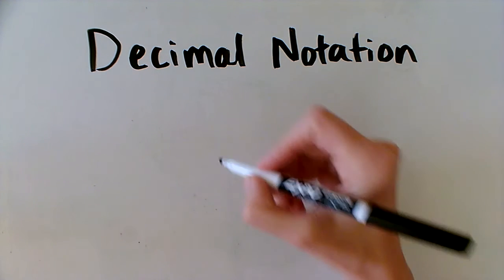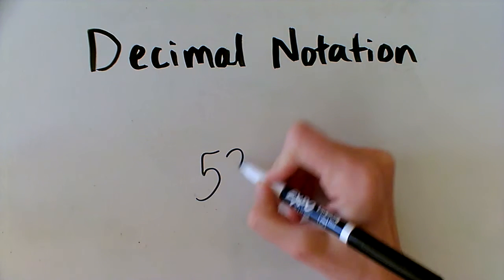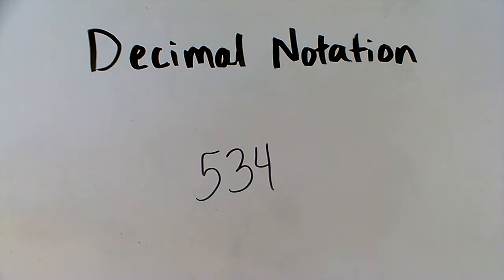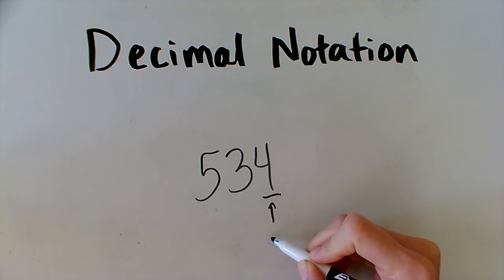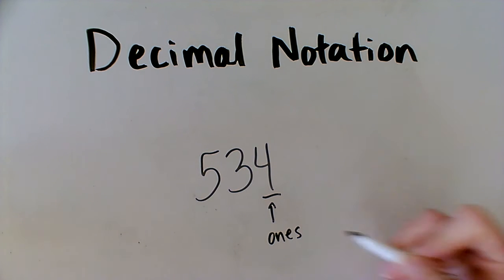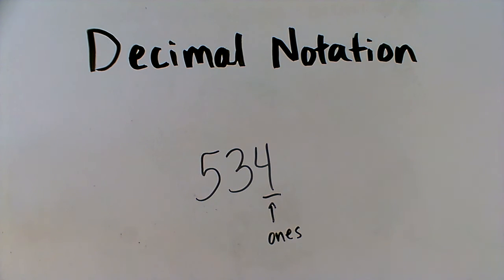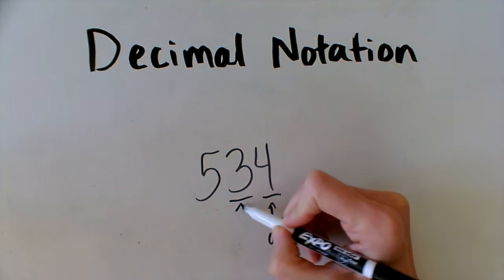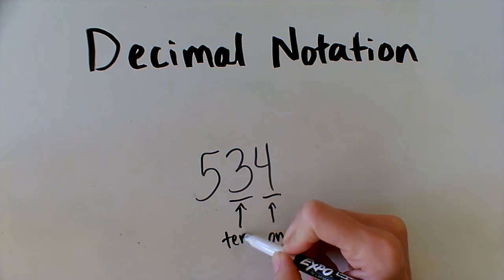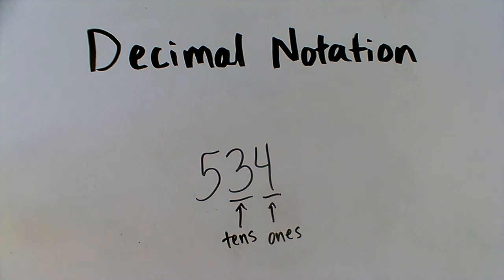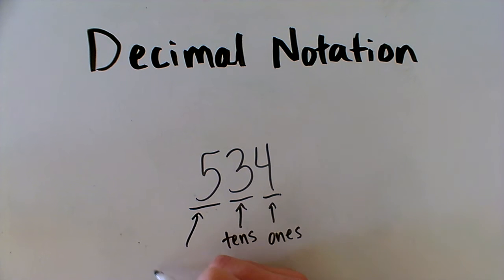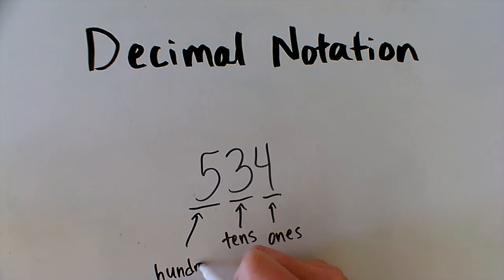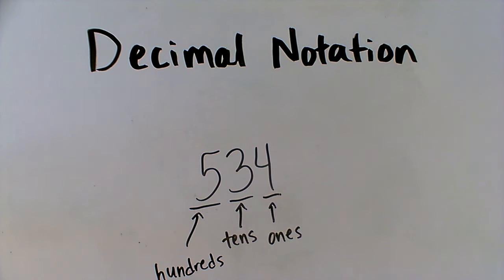For example, if we have the number 534, each of these digits has its own place. The 4 is in the ones place and it's worth 4. The 3 is in the tens place, so it's worth 3 tens, which is 30. The 5 is in the hundreds place, so it's worth 500.